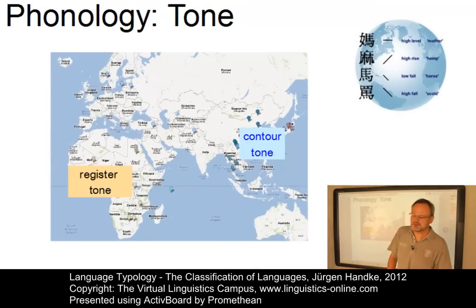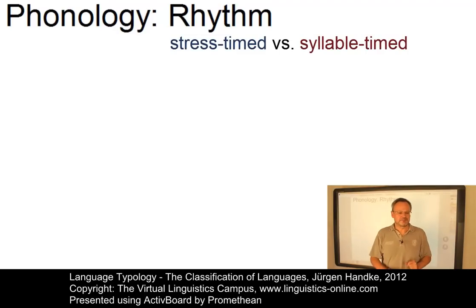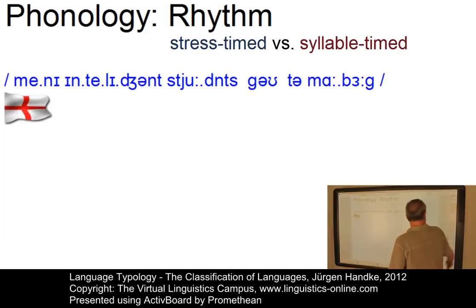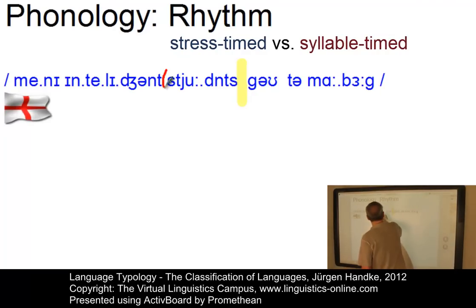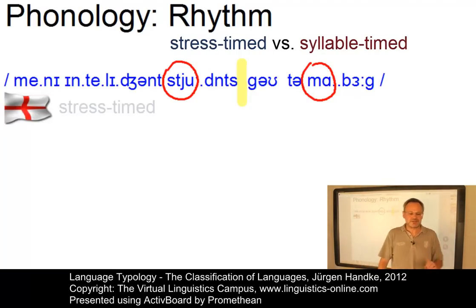The second phonological parameter often applied is a rhythmic parameter. According to the rhythmic organization of speech, languages can be subdivided into two types: stress-timed and syllable-timed. A language is defined as stress-timed when it shows, at a given rate of speech, a rhythmic patterning where tone units are roughly perceived as equal in length. English is such a case. For example, 'Many intelligent students go to Marburg' has two tone units with one nucleus each — 'stu' and 'Mar' — both roughly perceived as equal in length. Thus English is a typical stress-timed language.